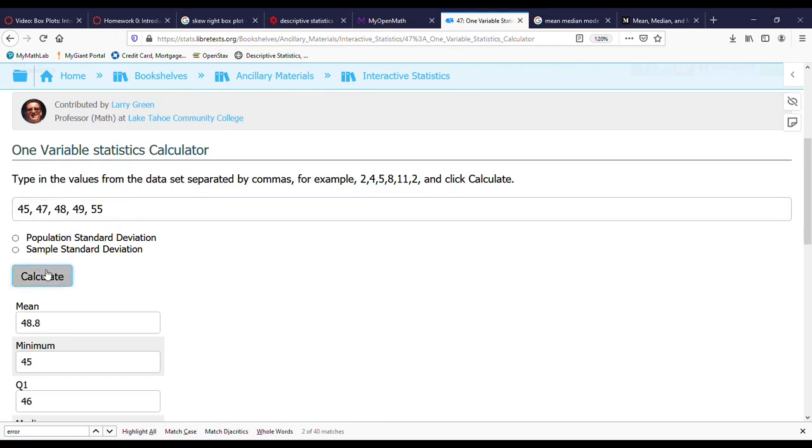So we'll calculate the average, and the average is 48.8, which is between 45 and 55.